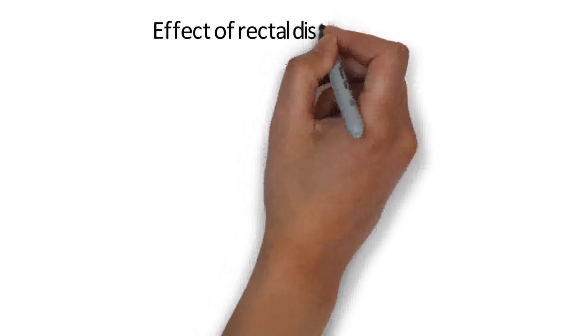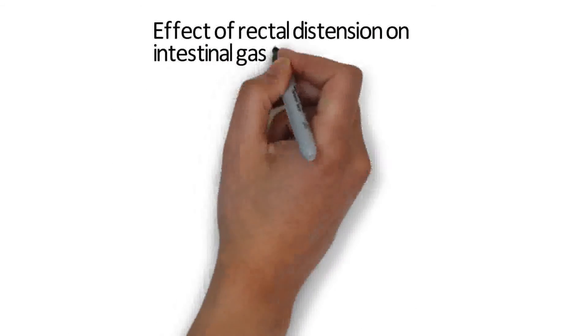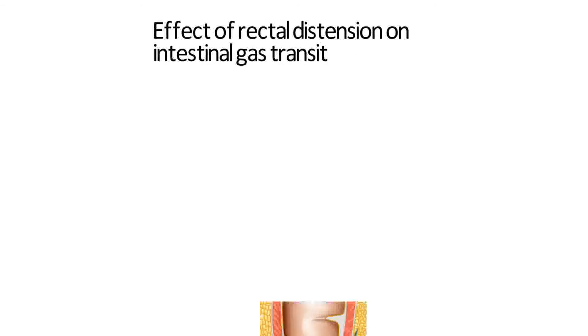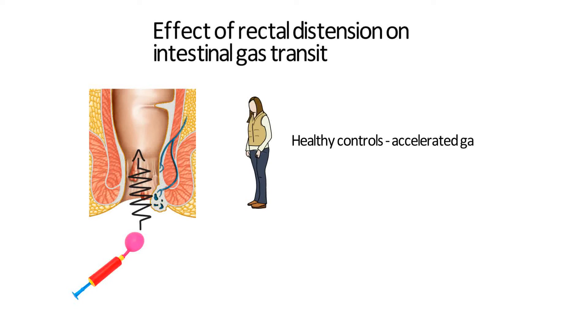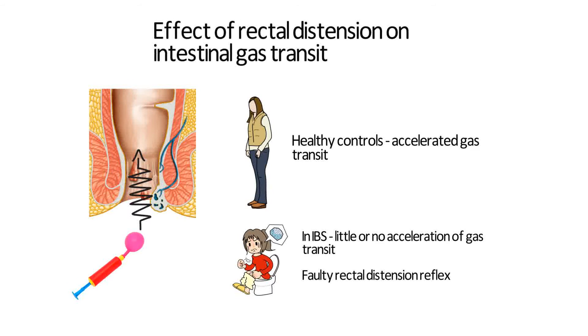Another intriguing observation relates to the effect of rectal distension on intestinal gas transit. Rectal distension plays a regulatory role in gas flow. In healthy controls, balloon distension of the rectum accelerates gas transit through the gut. However, when the rectum is distended in IBS patients, there is little or no acceleration of gas transit, indicating a faulty rectal distension reflex. This suggests that the reduced intestinal gas flow observed in IBS experiments might be caused by a faulty autonomic rectal enteric reflex.